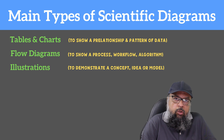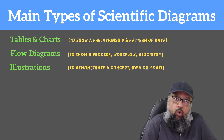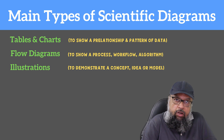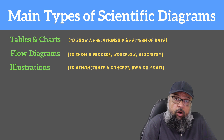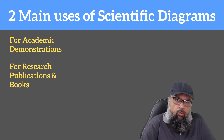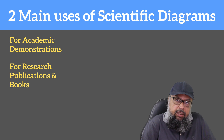Now let's talk about types of scientific diagrams. There are three main types: tables and charts, where you want to show a relationship between two quantities or a pattern in data; flow diagrams, where you want to show a process, workflow, or algorithm; and illustrations, where you want to demonstrate a scientific concept, a new idea, or a model. The two main use cases for scientific illustrations are academic demonstrations and research publications or books.